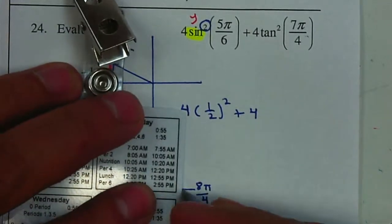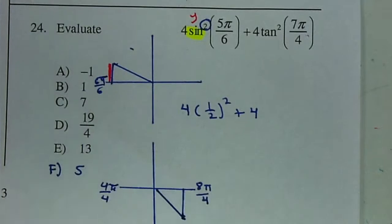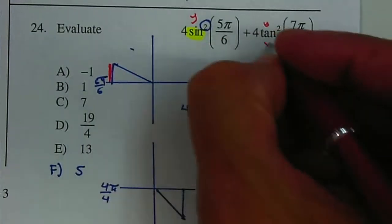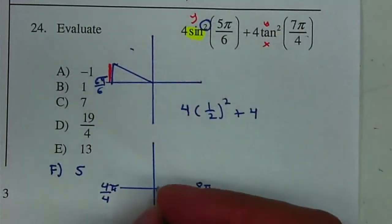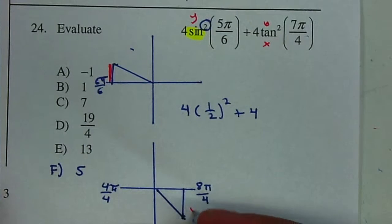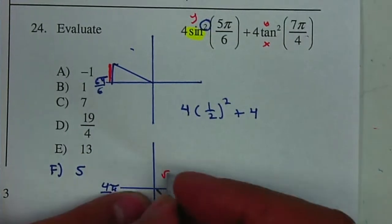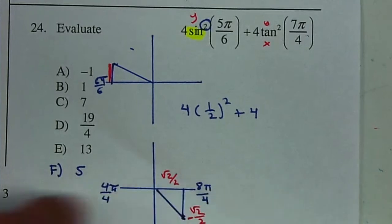And I'm looking for the tangent. Remember, your tangent is your y over your x. Your y is the square root of 2 over 2, but because it's going down, it will be negative. And your x will be square root of 2 over 2, to the right is positive.